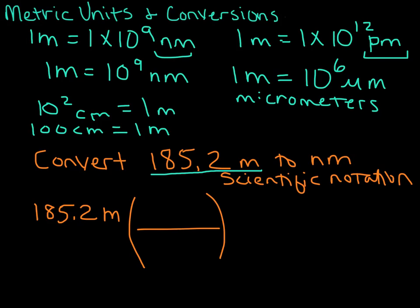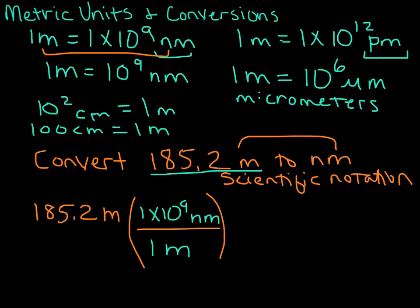Let's go ahead and use our conversion factor between meters and nanometers. I'm going to put meters on the bottom, because I need those to cancel out so that I end up in nanometers. So 1 meter on the bottom, and 10 to the 9 nanometers on top — directly writing this conversion factor into the bracket.